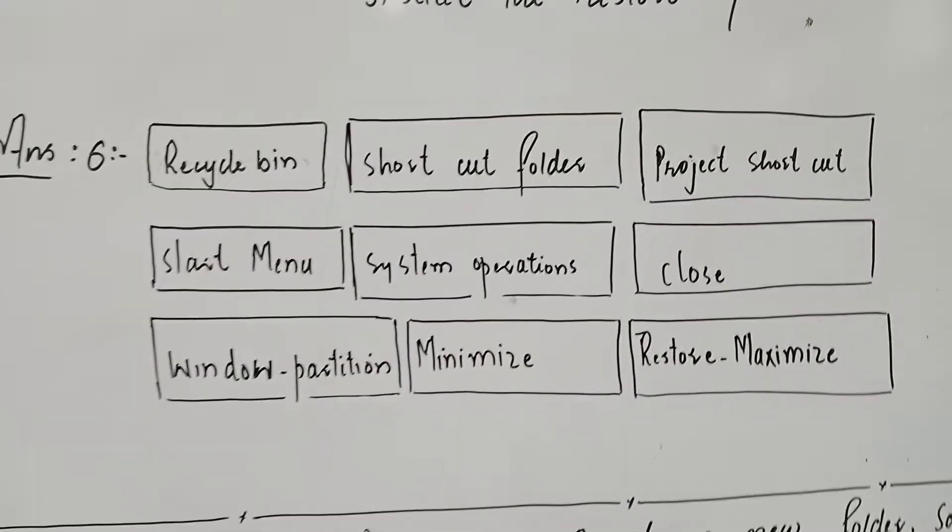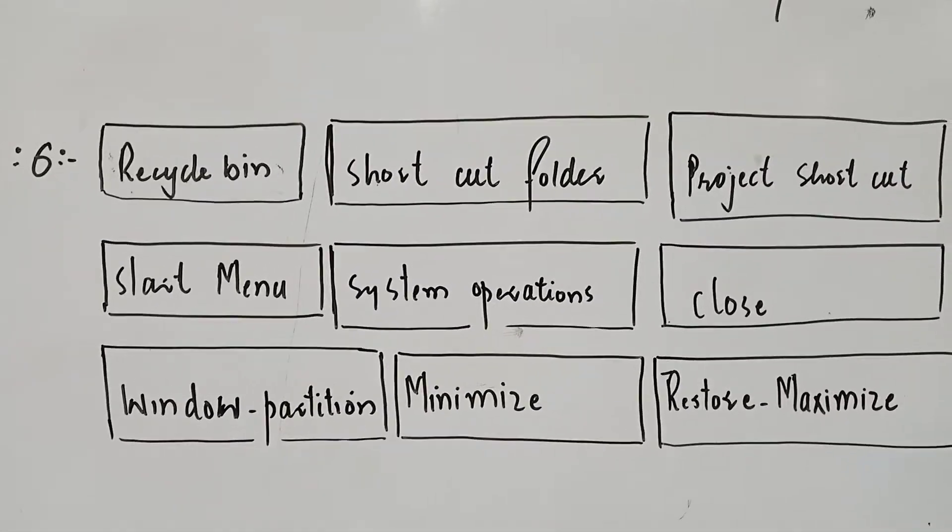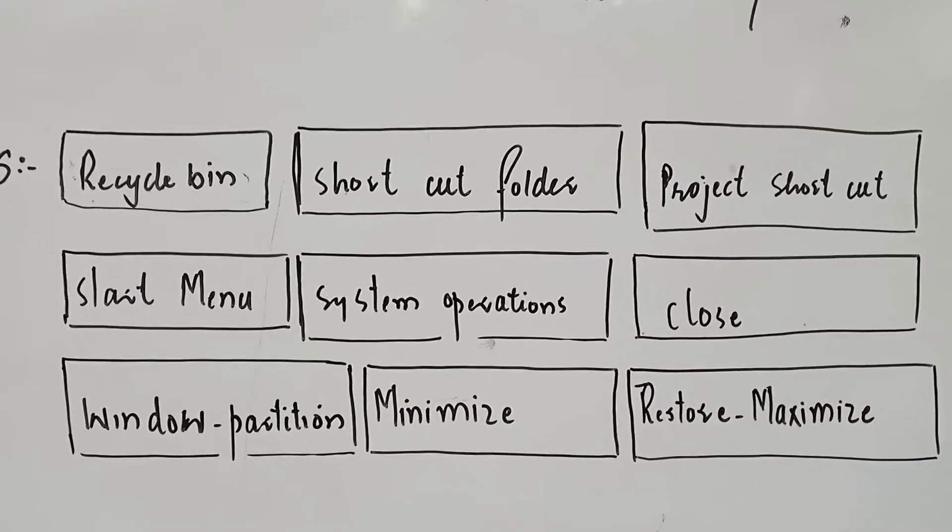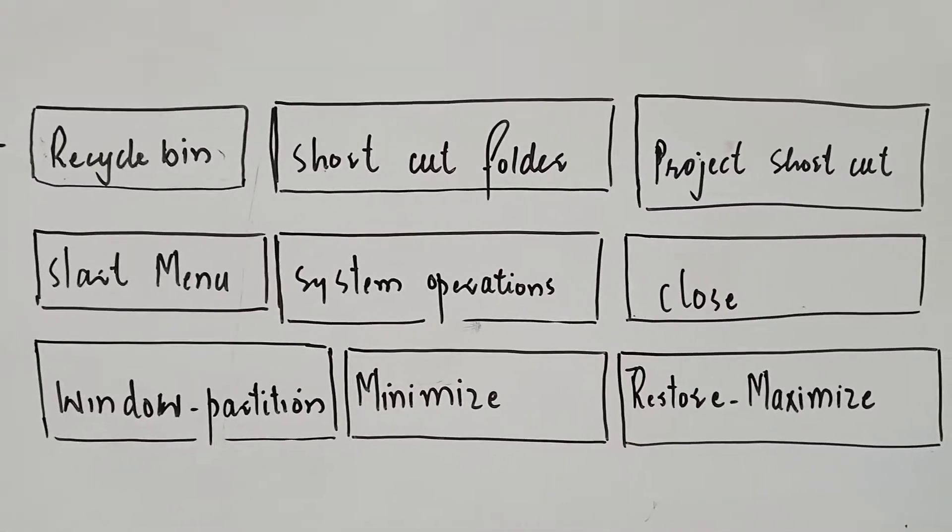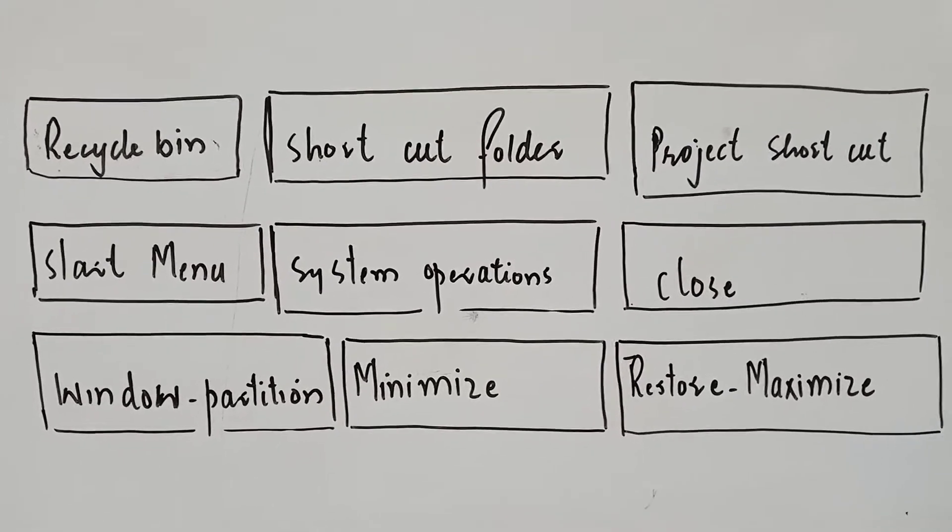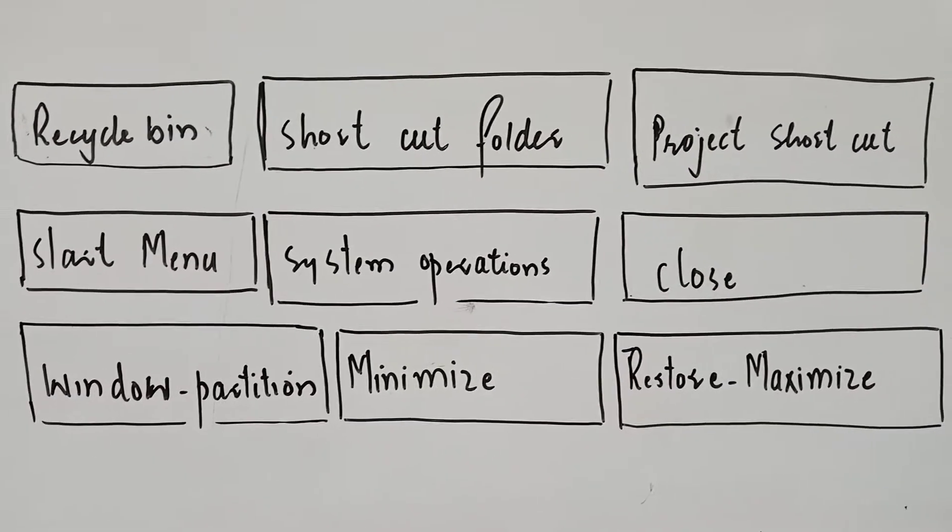This is a diagram showing a desktop with various elements: Recycle Bin, shortcut folder, project shortcut, Start menu, system operation buttons, close, window partitions, and minimize, restore, and maximize buttons.